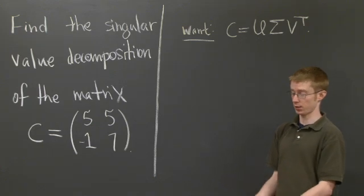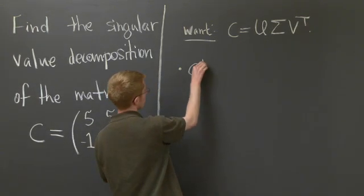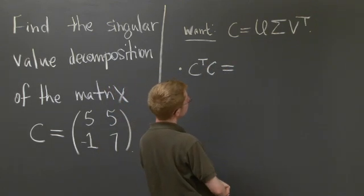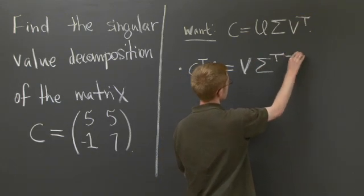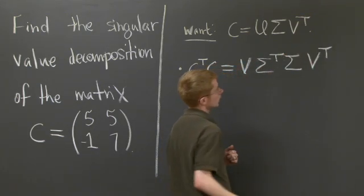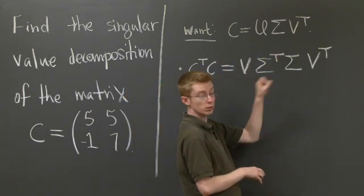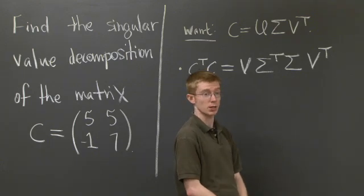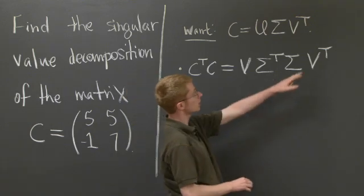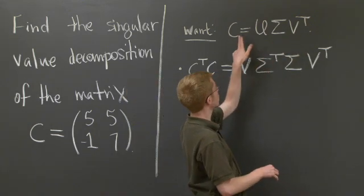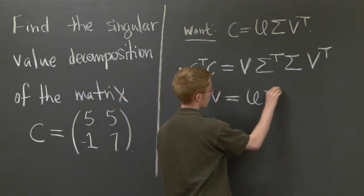We need two equations. One is C transpose C equals V Sigma transpose Sigma V transpose. And you get this just by plugging in C transpose C here and noticing that U transpose U is 1, since U is an orthogonal matrix. And the second equation is just noticing that V transpose is V inverse and moving it to the other side of the equation, which is CV equals U Sigma.